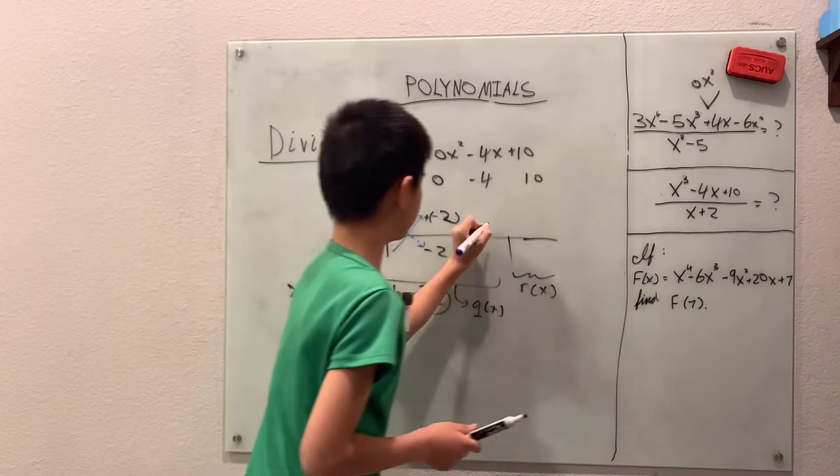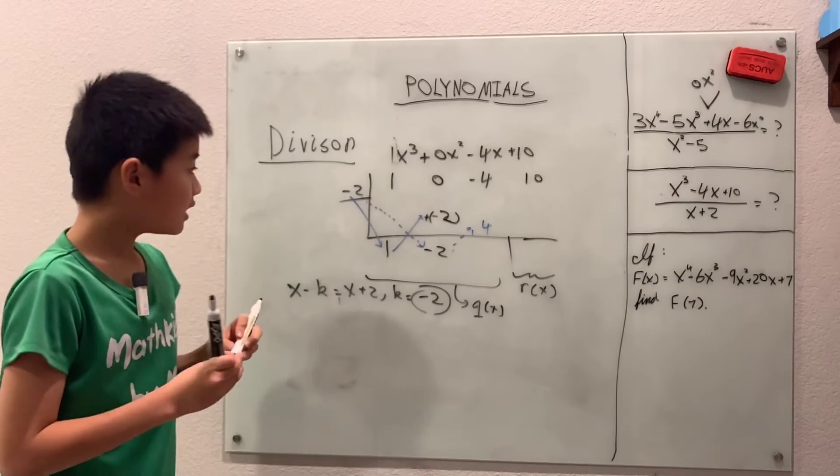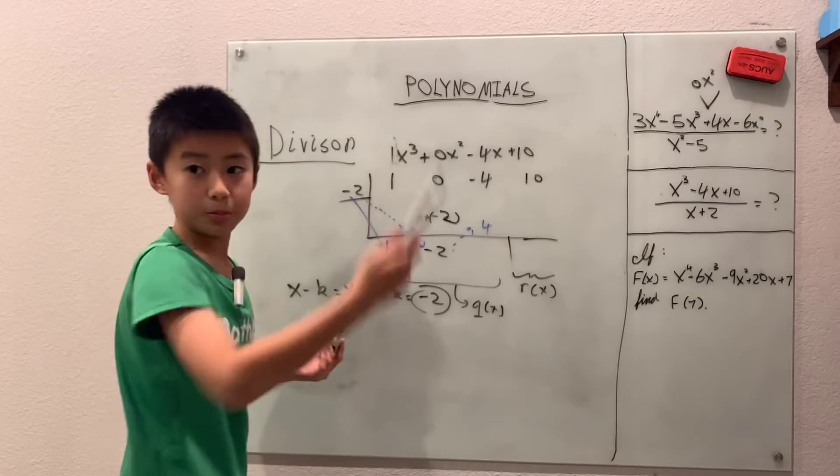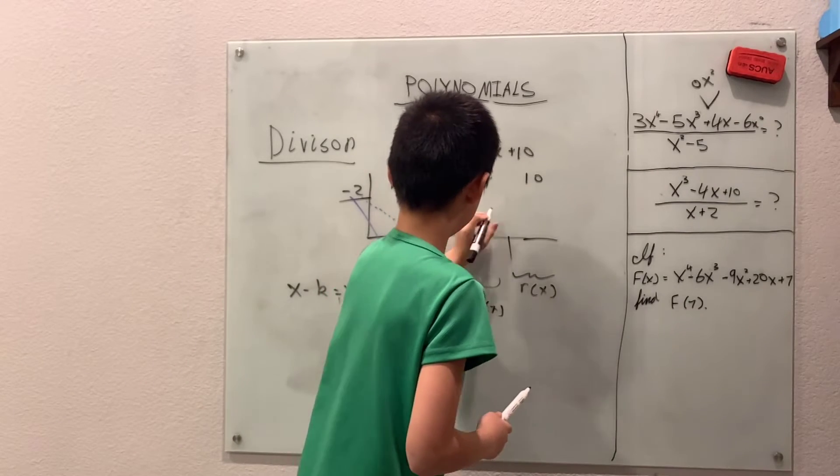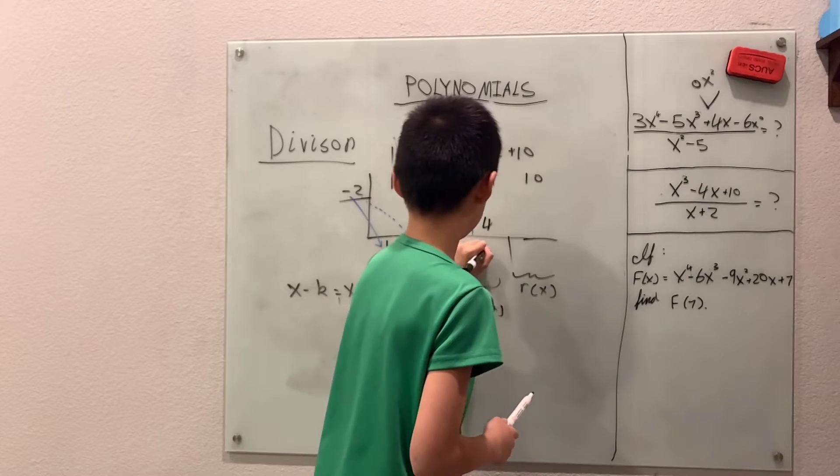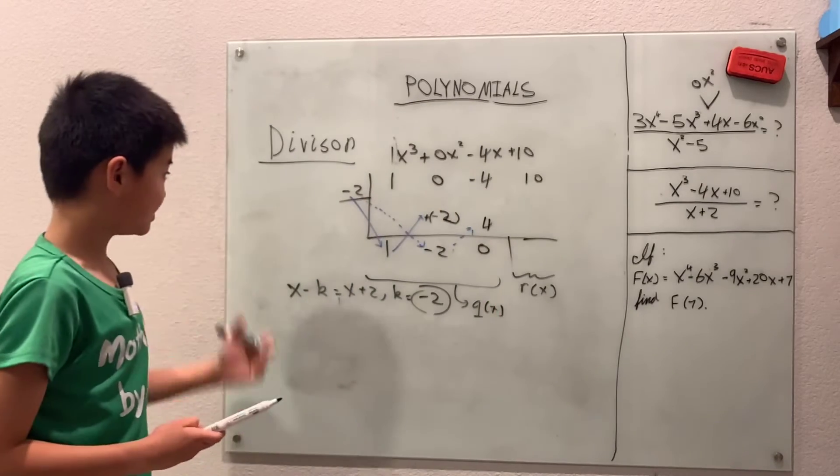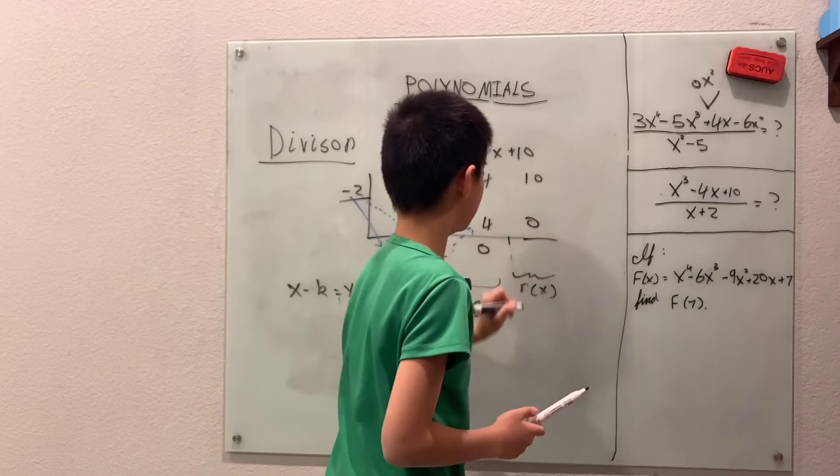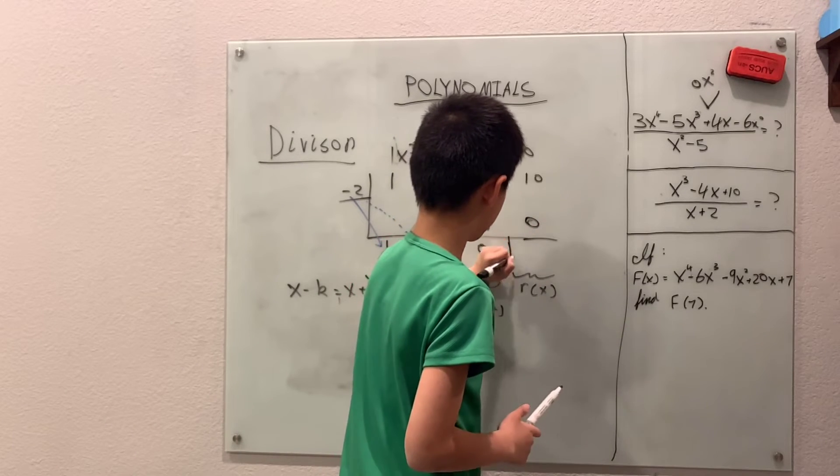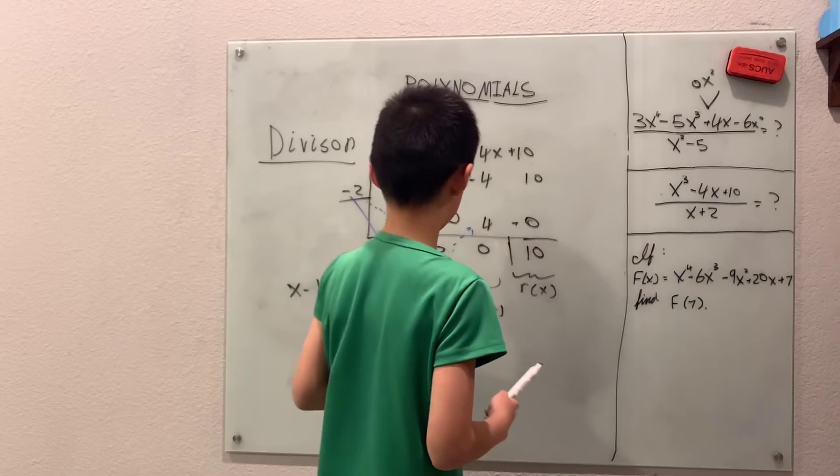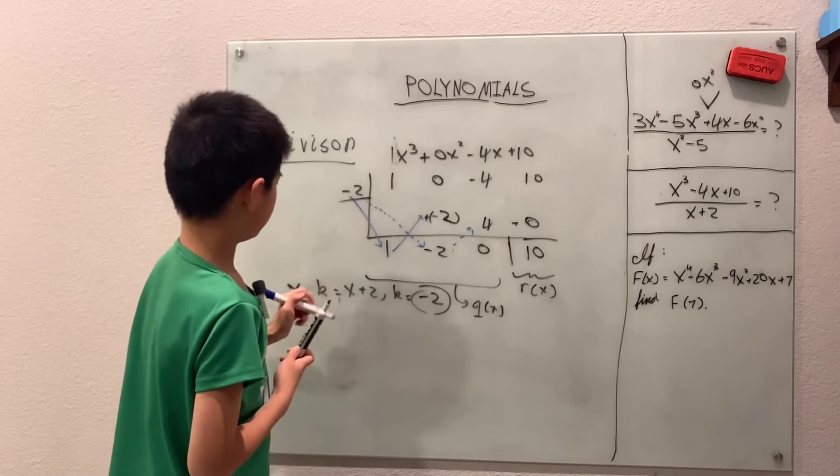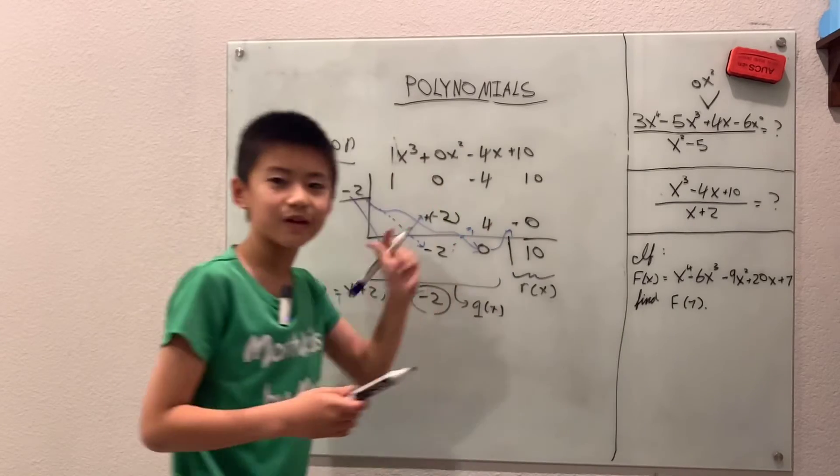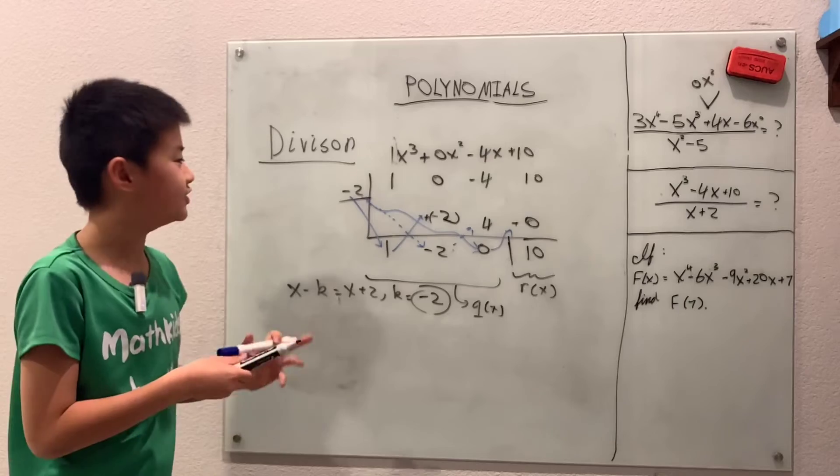And then we have negative two times negative two again, to get the result which is four, right? And then adding together we have negative four plus four which is zero, and negative two times zero which is still zero, and adding together we have 10, right? And well, this isn't really that necessary, but something like this—you don't have to draw all these blue lines and all that kind of stuff, but just to show you what basically happens in here.